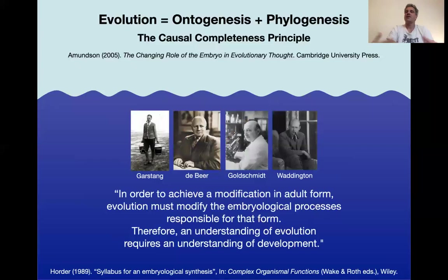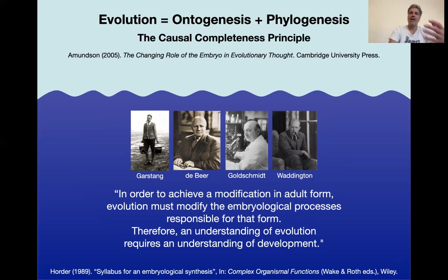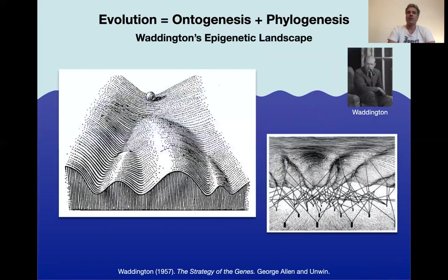Here is the causal completeness principle, which I recommend from Amundsen's book — an absolutely fantastic history of evo-devo. It states, in the words of Horder: "In order to achieve a modification in adult form, evolution must modify the embryological processes responsible for that form. Therefore, an understanding of evolution requires an understanding of development." We can substitute life cycle processes, or any sort of ontogenesis, for development here. We need to understand where the life cycle comes from to understand where the variation comes from. Waddington's metaphors were intended to guide such a research program already from the 1940s onward.